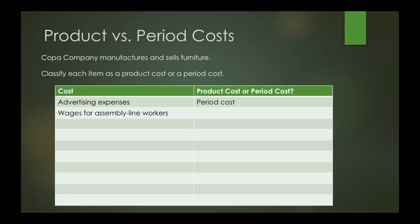Now, wages for assembly line workers. Assembly line workers are part of the manufacturing process, so that's a product cost — and specifically, that's direct labor.